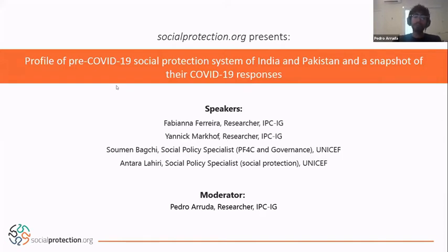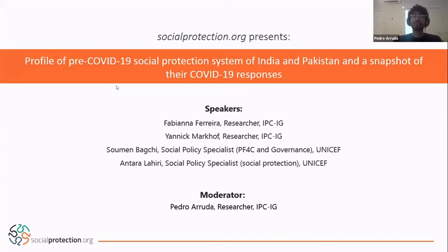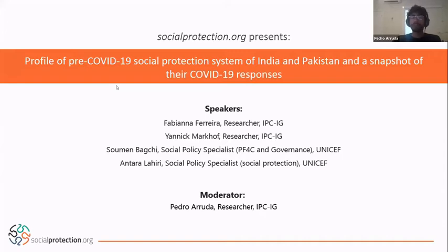After that, we will have an important presentation by colleagues from UNICEF India — Antara and Sumer. They will share their ground experience as influence players in the design of COVID responses, shedding light on what should come next for social protection in India. As a spoiler: stay tuned until the end, as their presentation includes interesting discussions on the potential rolling out of a universal child grant for India.